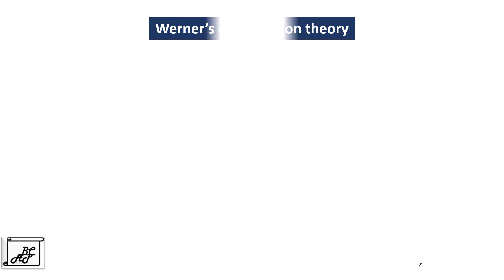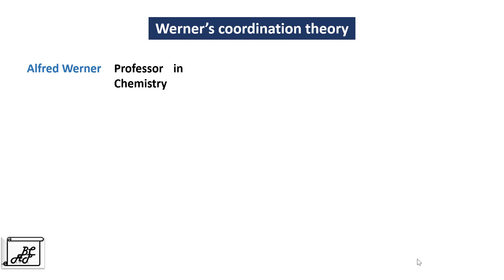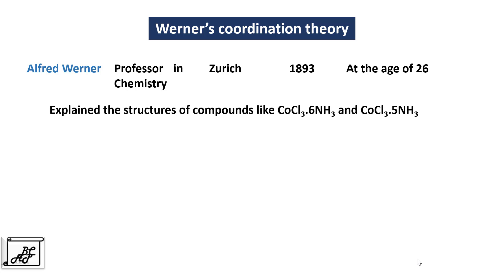Werner's coordination theory was put forward by Alfred Werner, who was a professor of chemistry in Zurich. In 1893, at the age of 26, Werner proposed this theory to explain the structure of compounds like CoCl3·6NH3, CoCl3·5NH3, and so on.